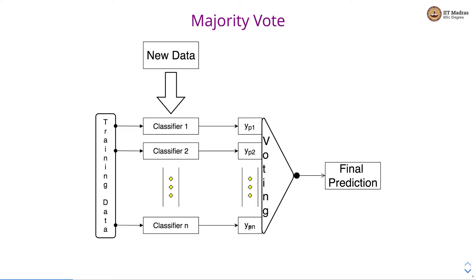We basically get n predictions. Each prediction can be considered as a vote of a classifier for a specific label. And in voting, we basically take a majority vote to assign the label to the new example.